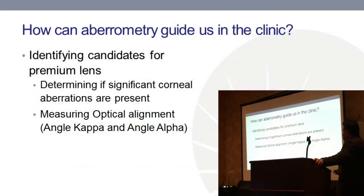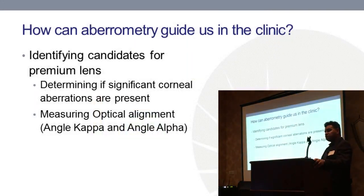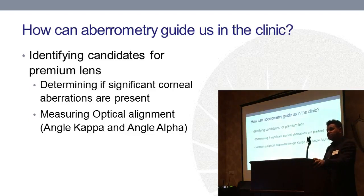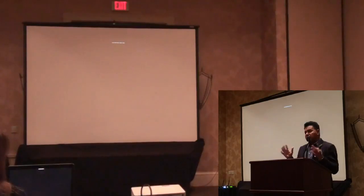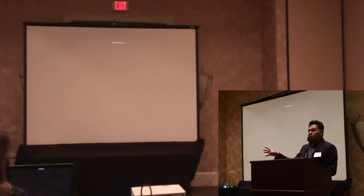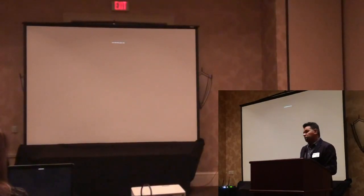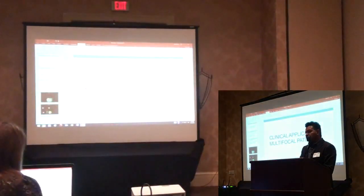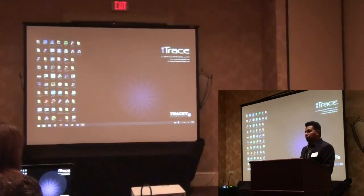We can also use the iTrace to identify candidates for premium lenses. As Dr. Marr discussed, we can assess alpha angle and angle kappa, and determine if significant corneal aberrations are present that would make a patient a poor candidate for multifocal lenses. It's very easy to put someone on the iTrace and say, you have a lot of corneal irregularity — maybe a multifocal lens isn't best for you, or your angle kappa is above 300 microns. The possibilities with this device are really limitless, and I'm still on the early part of the learning curve. Thank you very much for inviting me.